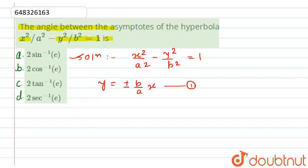Now from this equation, what we can write is the slope of first asymptote will be equals to plus b upon a. Let's suppose this is m1 and similarly, the slope of second asymptote m2 will be equals to minus b divided by a.